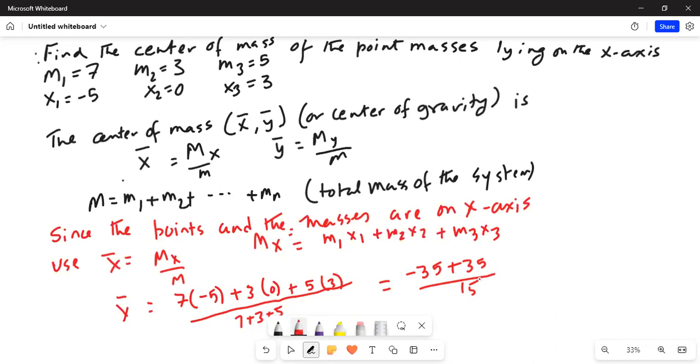Actually I made a mistake. This will be 5 times 3, not 5 times 7, so it is plus 15. 5 times 3 is 15, 3 times 0 is 0, plus 5 times 3 is 15, so it is 15 minus 35 which is minus 20 divided by 15, or minus 4 over 3. This is your answer.